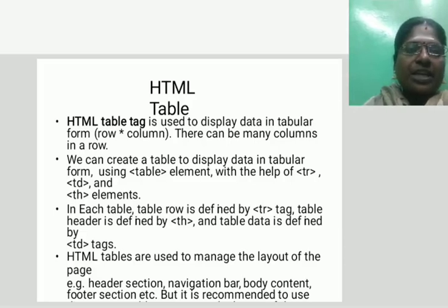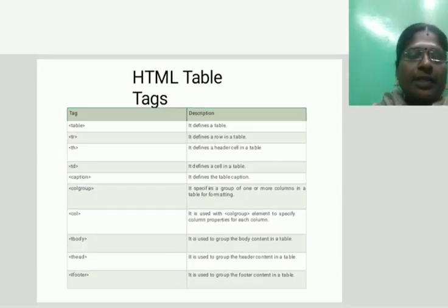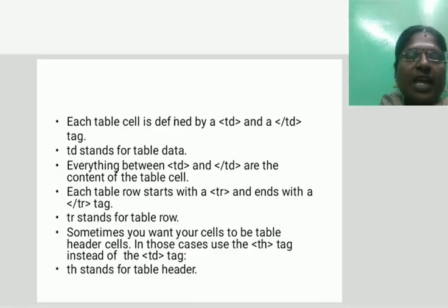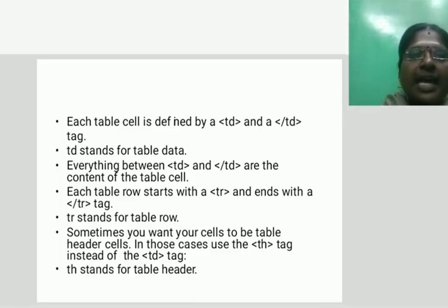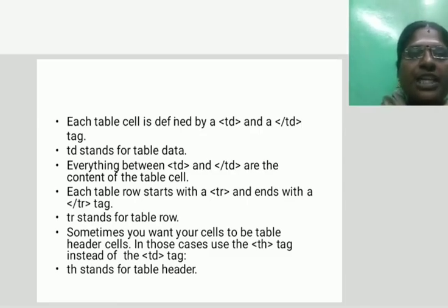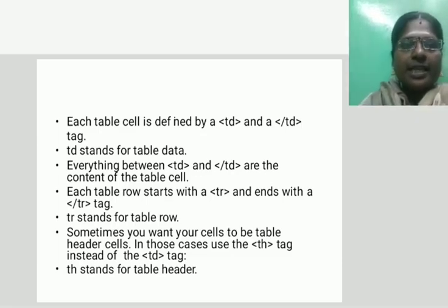Examples of table layout sections include: header section, navigation bar, body content, and footer section. Each table cell is defined by opening and closing td tags — td stands for table data. Everything between the td tags is the content of the table cell. Each table row starts with tr and ends with a closing tr tag — it stands for table row.